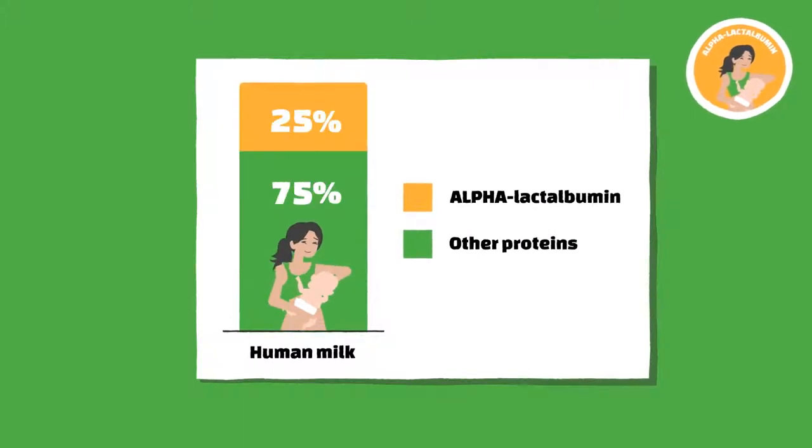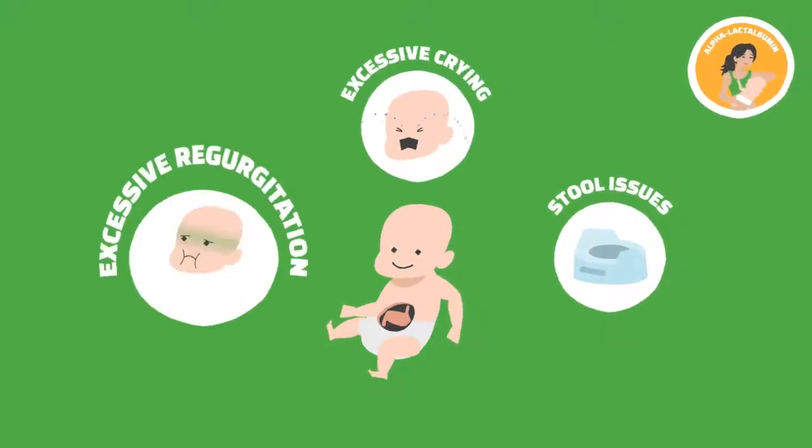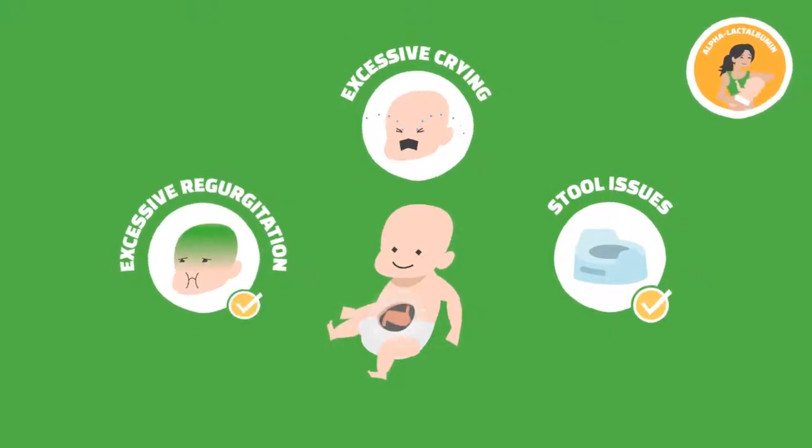Alpha-lactalbumin is the most abundant protein in human milk, and it is an easily digestible protein which provides formula-fed infants a similar gastrointestinal tolerance to breastfed infants and has been proven to reduce constipation and regurgitation.